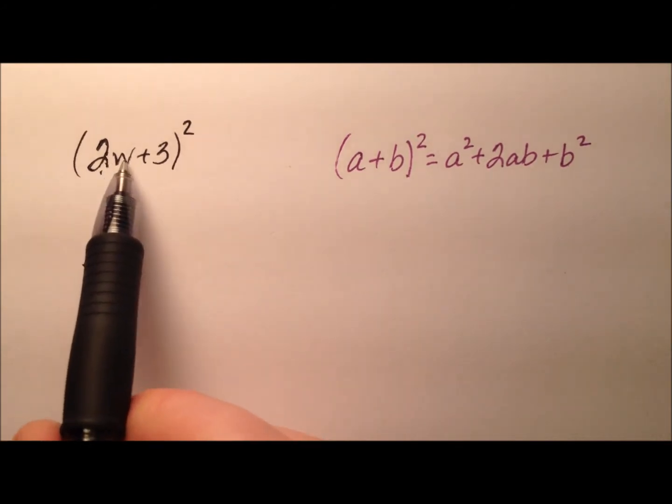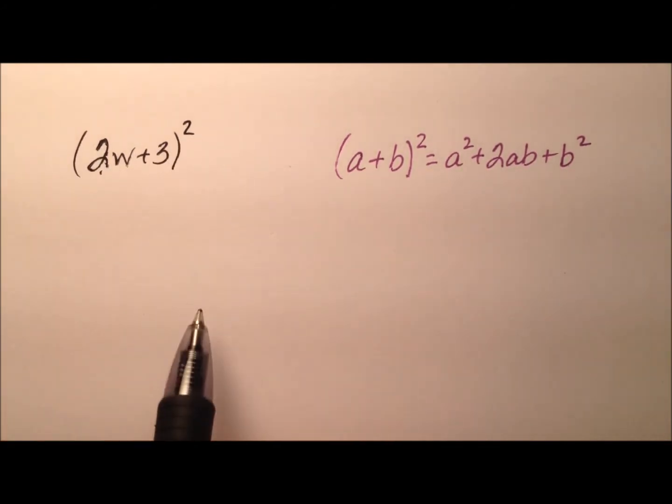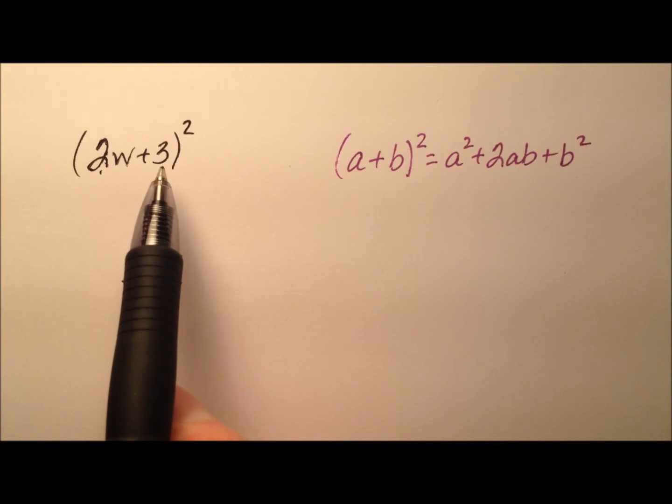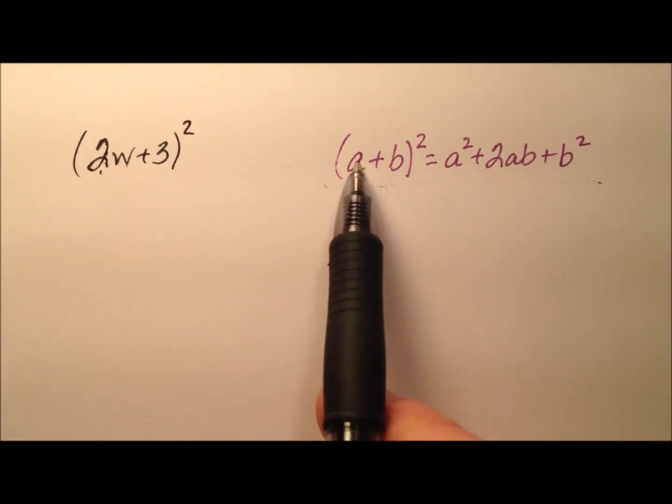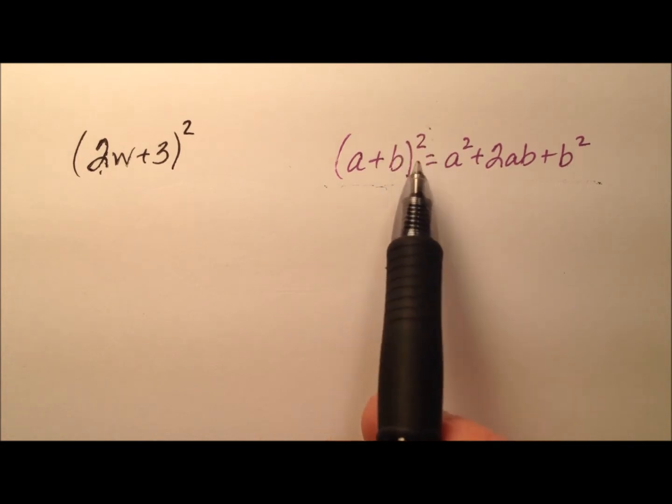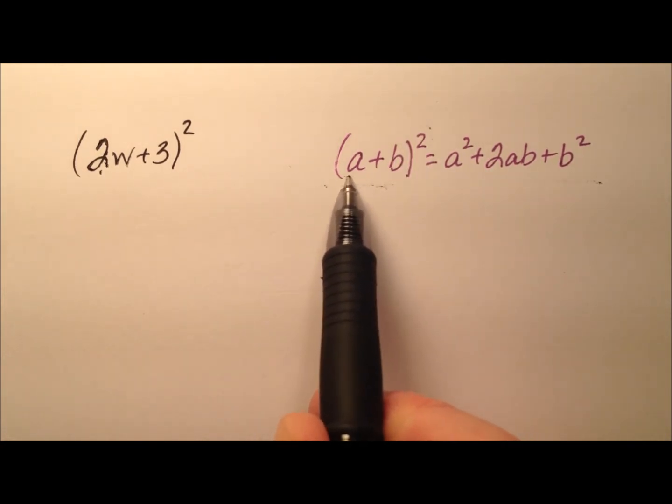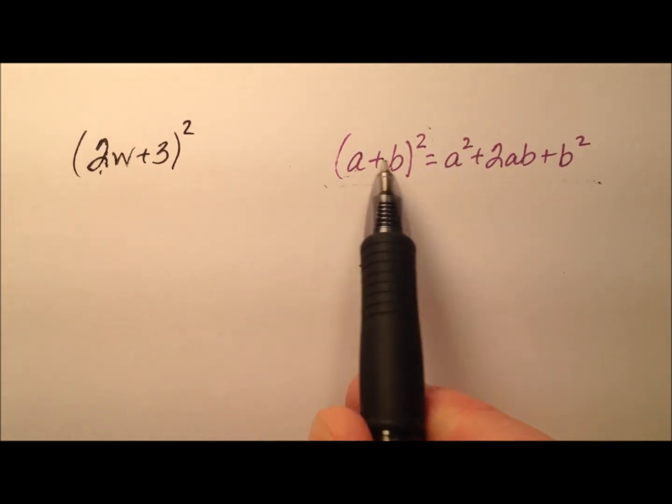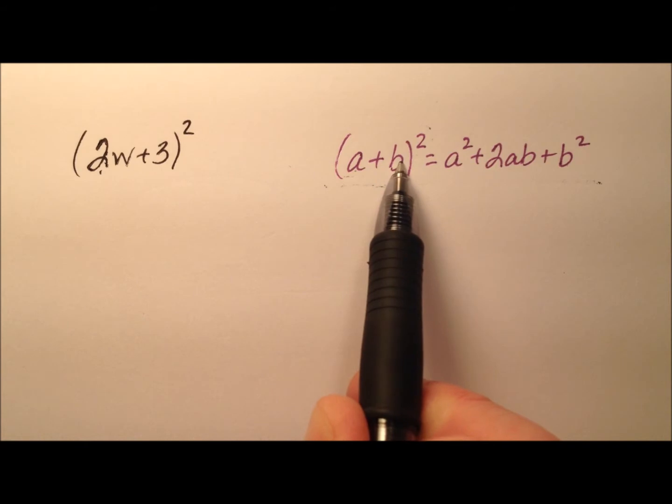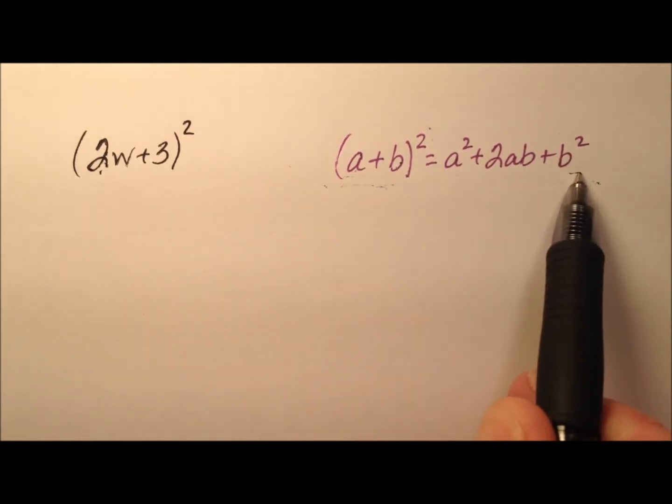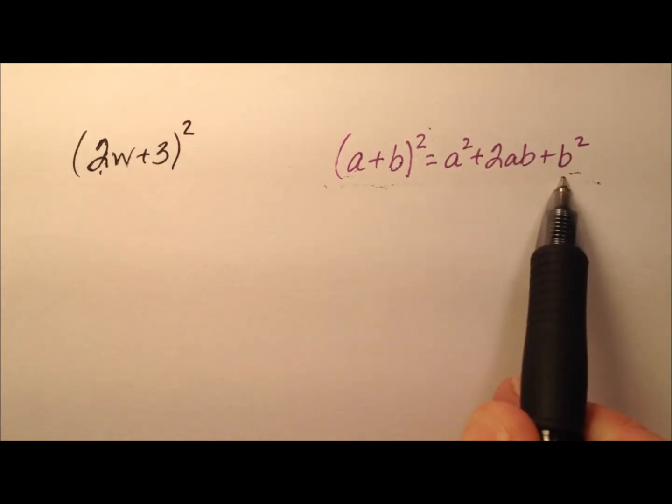In this example we're going to take 2w plus 3 and we're going to square it. So we can do this one of two ways. You'll see I've written a formula over here where we have a binomial and it's a perfect square where we can square the first term, a squared, and we can take twice the product of the two terms, so 2 times a times b, and then finally square the second term and add them all together. So we can use the formula, which we'll do here in a second.